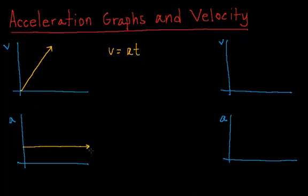Because the acceleration would be constant. Now if we wanted to find the change in velocity from this point to this point, we would multiply a times t. And as we learned in the video with velocity graphs and position, this is the same as the area under the graph.